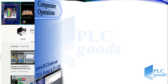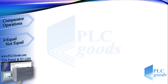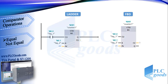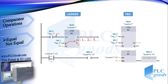Let's start this video. First I have a counter, which was covered in a previous video. With each positive pulse, the current value will be increased. Also with the reset input we can transfer a zero value to the CV output. Now let's see the first comparator instruction: equality.